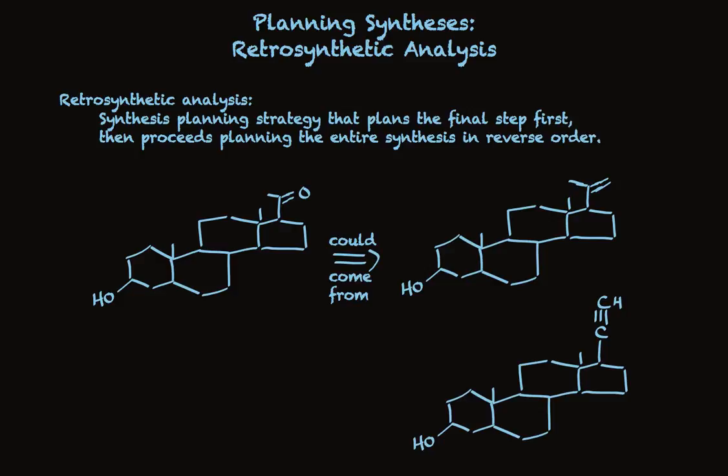Of course, we now have to figure out how we would make the alkene or how we would make the alkyne. But in the process of planning precursors one step at a time, working backwards, we can work our way to more manageable structures that are easier to synthesize and more like the starting materials we have available. This retrosynthetic analysis strategy is a winning approach that I strongly recommend, and it will work far better than guessing starting materials.